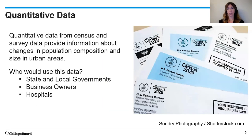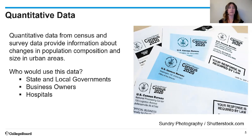The quantitative data we get from census and surveys looks at changes in population composition. It could be demographics in terms of income, ethnicity, education levels, gender ratios, and age. We also look at the size — the actual numbers. Who would use this type of data? State and local governments, business owners, and hospitals.